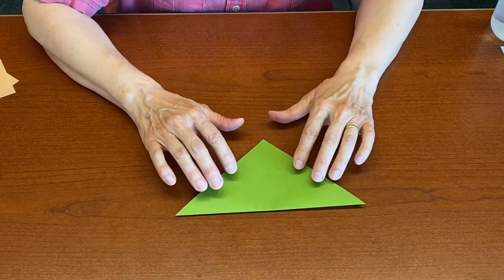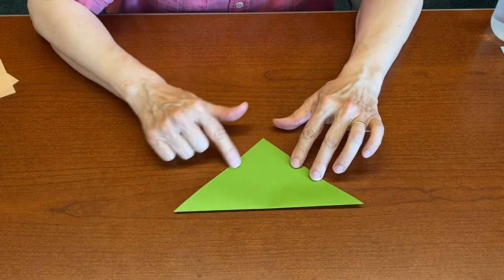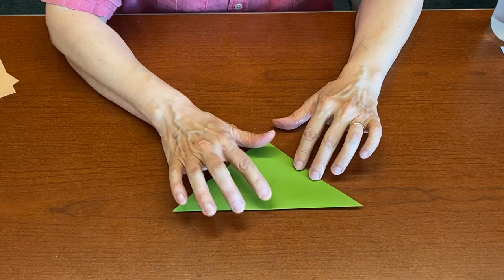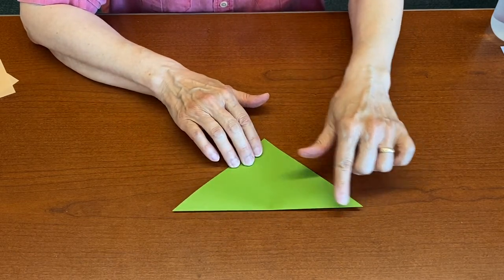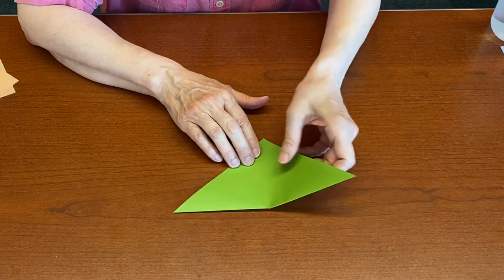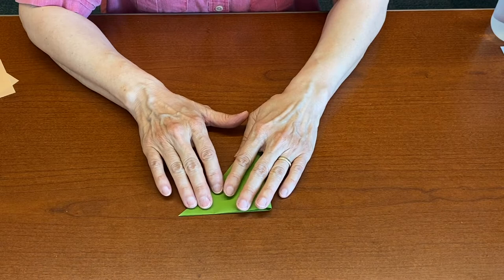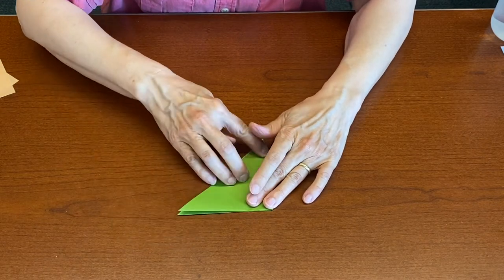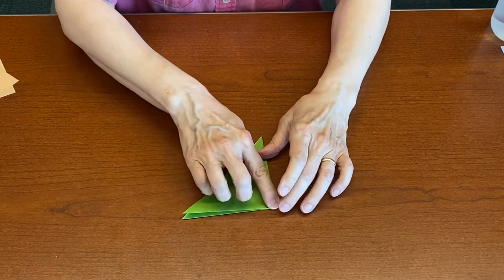So now you have a big triangle. It's a right triangle, that means it has a 90 degree corner up here. We're going to fold the triangle in half side to side. We're going to bring this point over to this point. Not perfect but good enough.